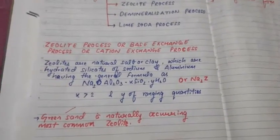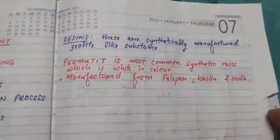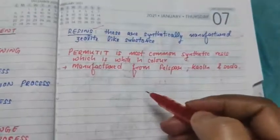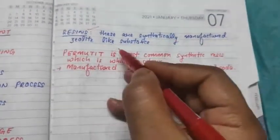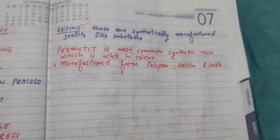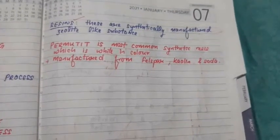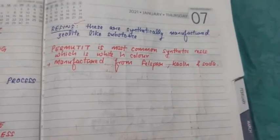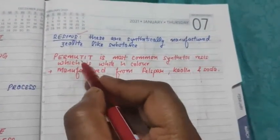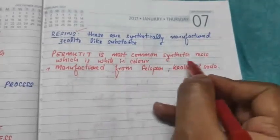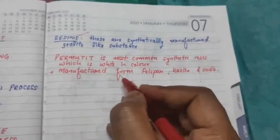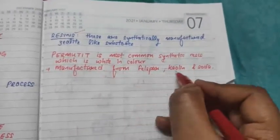Similarly, there are synthetically prepared zeolites, which we call resins. The most common synthetic resin is permutite. Permutite is white in color and is manufactured from feldspar, kaolinite, and soda.